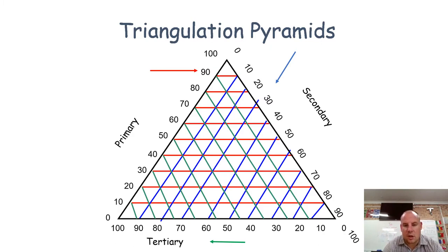It shows three different sets of data. Here we can see tertiary, primary, and secondary employment types. The numbers on all three sides go from zero to a hundred and they represent percentages.